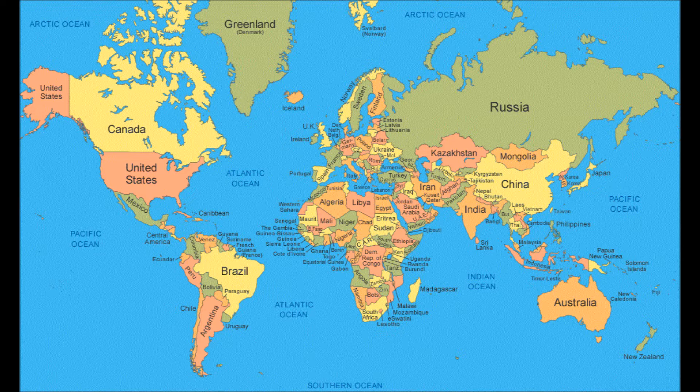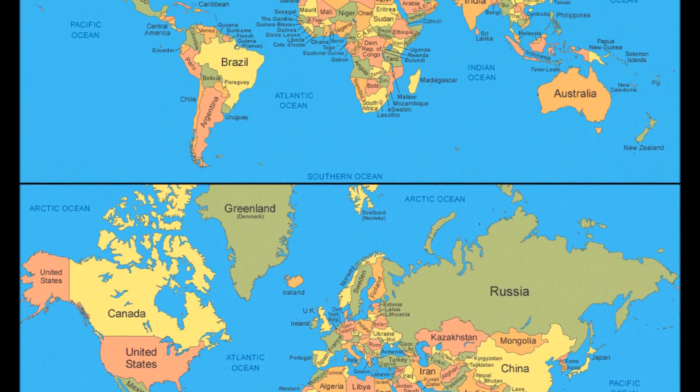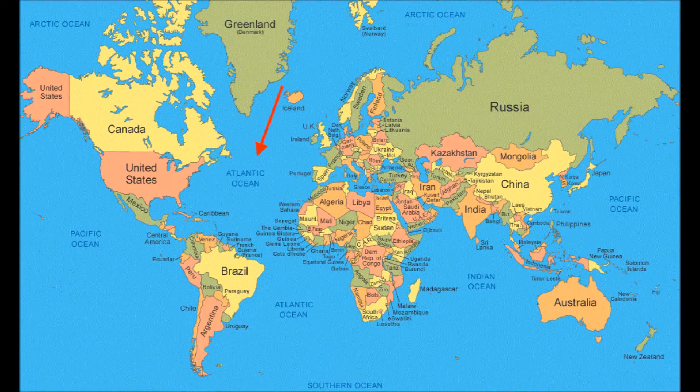1492 was, it turns out, an inflection point, the first curve in the hockey stick of human population growth. The location of population also changed radically. In 1492, the world's biggest cities clustered in the tropics, all but one within 30 degrees of the equator.